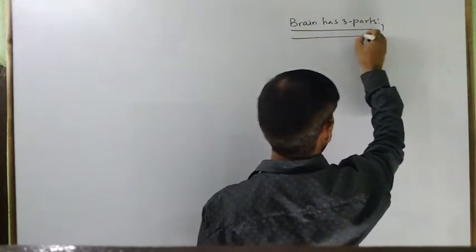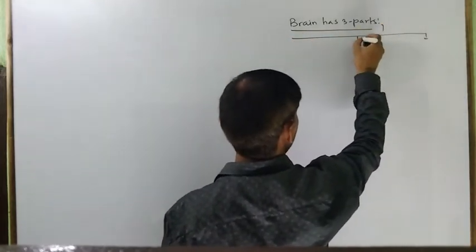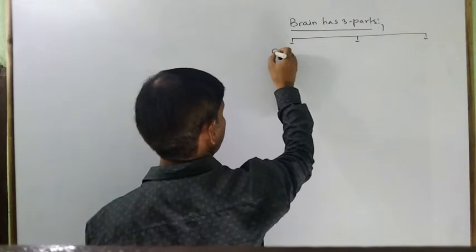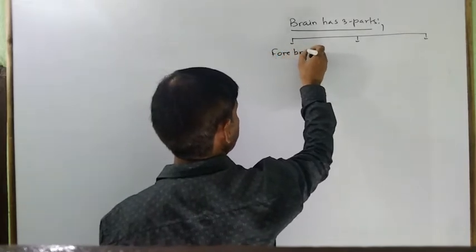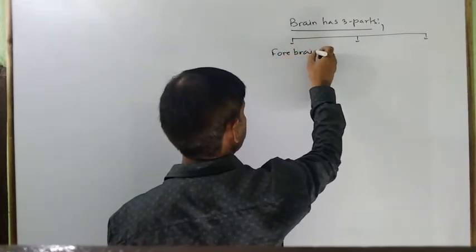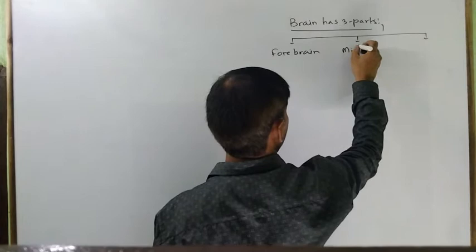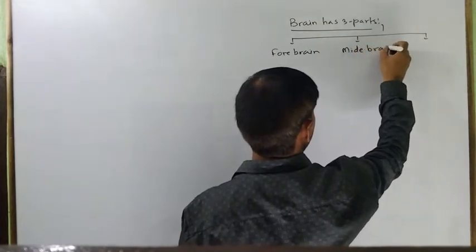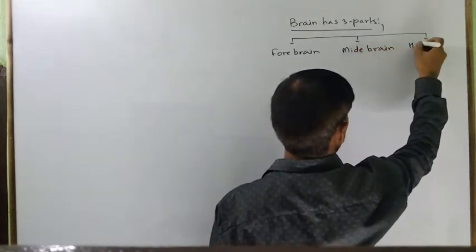The three parts of the brain are: forebrain, midbrain, and hindbrain.